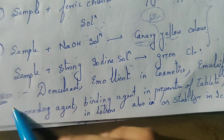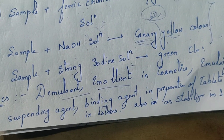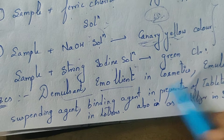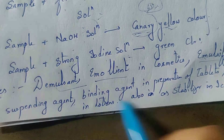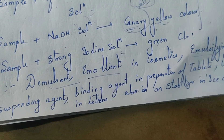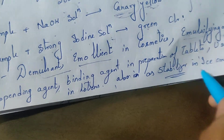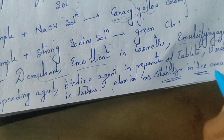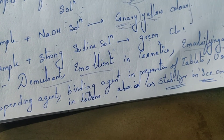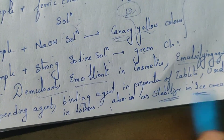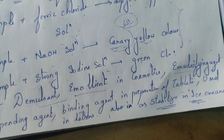Uses: Tragacanth is used as a demulcent and emollient in cosmetics. It is also used as an emulsifying agent, suspending agent, and binding agent in the preparation of tablets. It is used in lotions and also as a stabilizer in ice creams. This concludes the topic of Tragacanth.